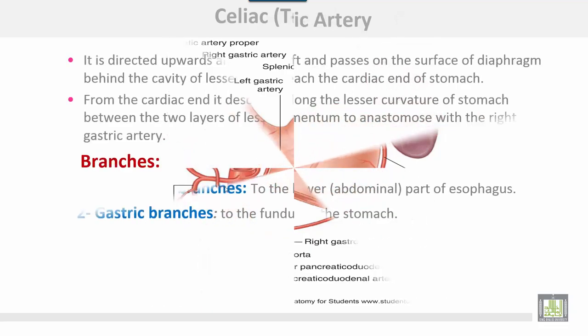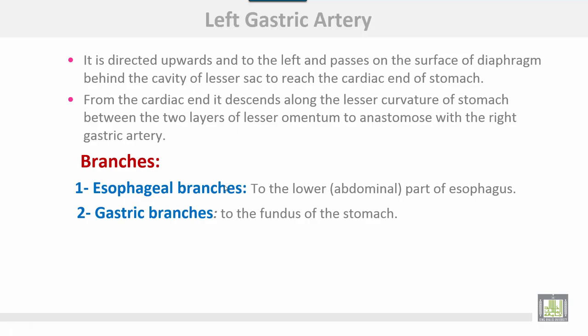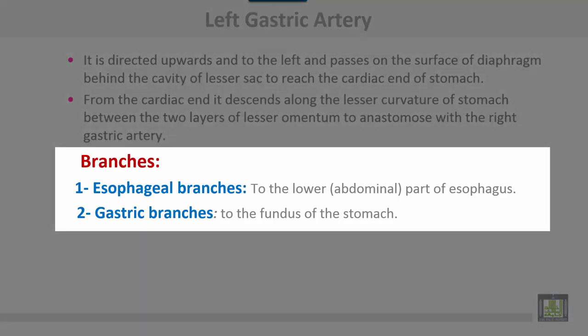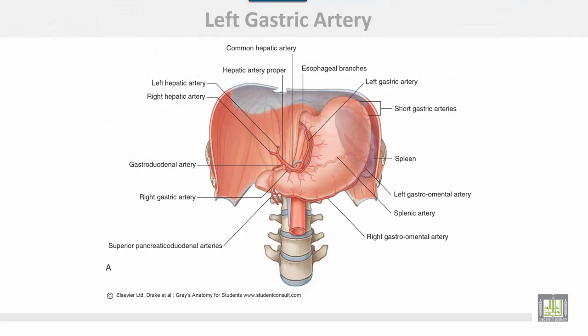The left gastric artery is directed upward and to the left and passes on the surface of the frame behind the cavity of the lesser sac to reach the cardiac end of the stomach. From the cardiac end, it descends along the lesser curvature of the stomach between the two layers of the lesser omentum to anastomose with the right gastric artery. Branches of the left gastric include esophageal branches to the lower abdominal part of the esophagus, and gastric branches to the fundus of the stomach.